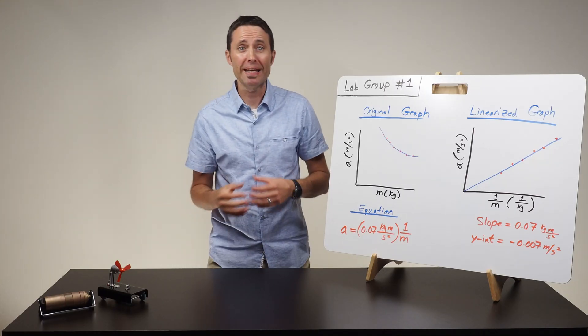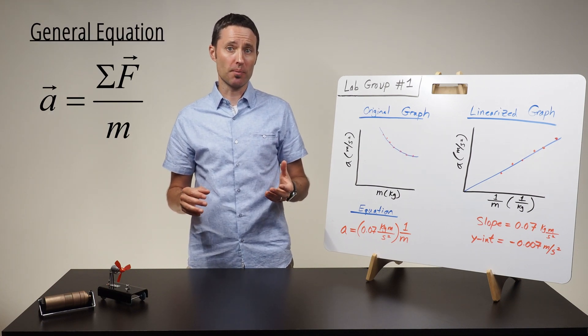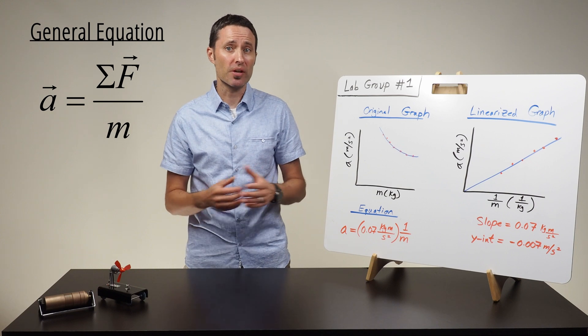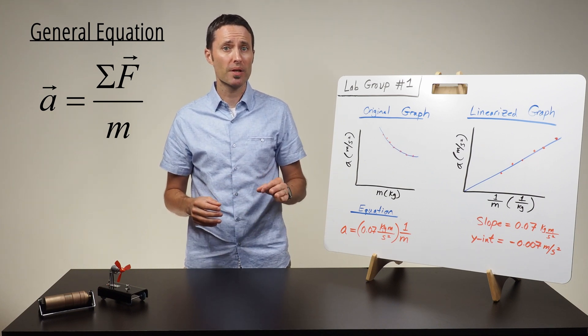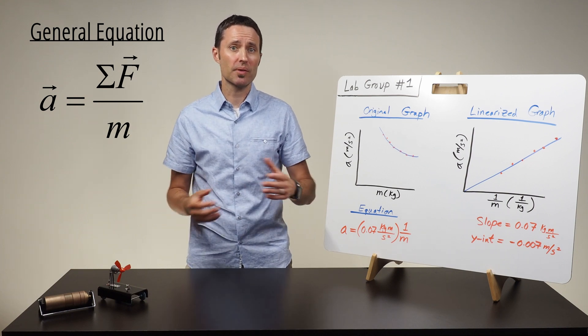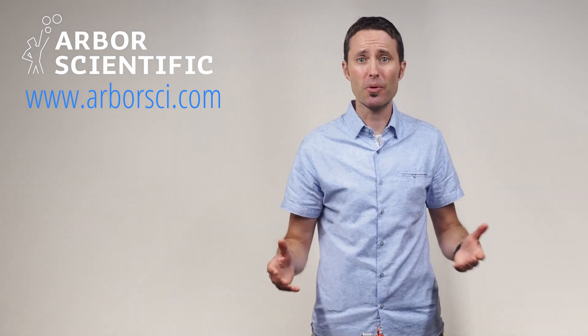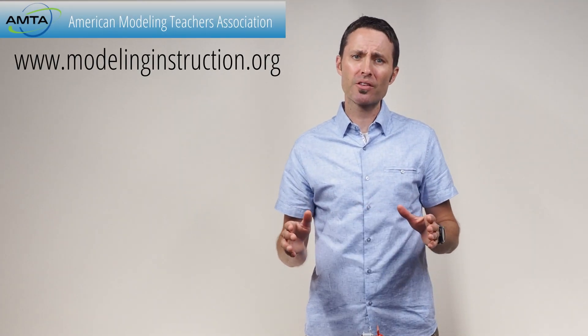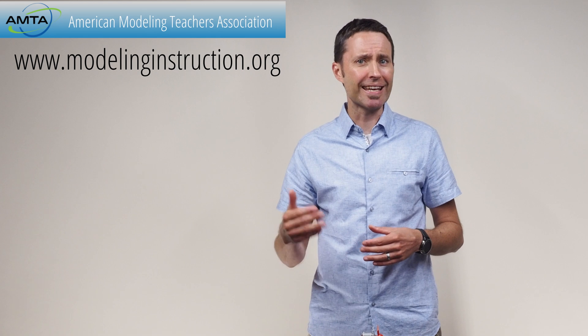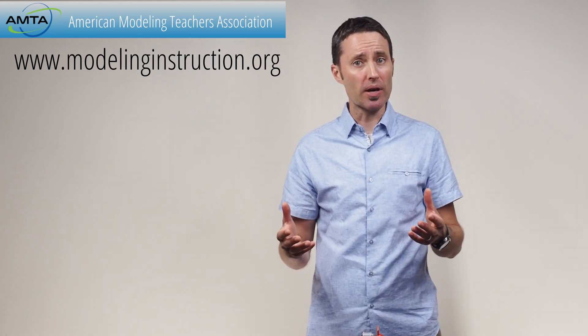After the students reach a consensus about the meaning of the slope and the significance of the y-intercept, you can finally write the general equation on the board. Tell students that this general equation is known as Newton's Second Law of Motion, which shows the relationship between an object's acceleration, mass, and the sum of the forces. You can find all the lab equipment needed at www.arborsci.com, and if you're interested in learning more about these types of guided inquiry labs used in the modeling method of instruction, visit www.modelinginstruction.org. Happy investigating!